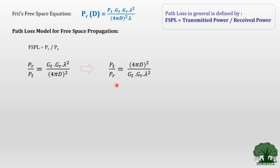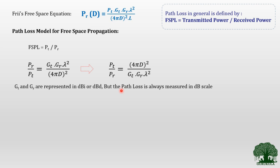There is one thing to observe here: the terms GT and GR are represented either in dBi or dBd. But usually path loss is measured on a dB scale. So in order to convert the above equation to dB scale, we take 10 log on both sides. Taking 10 log on both sides, 10 log(PT/PR) = 10 log[(4πD)² / (GT × GR × lambda²)].